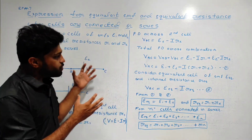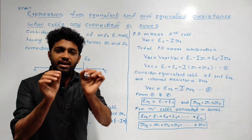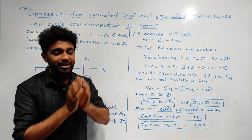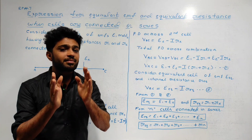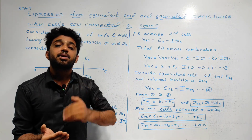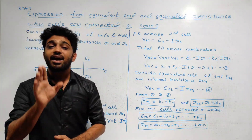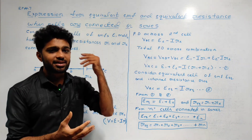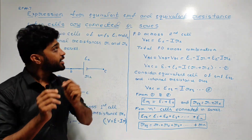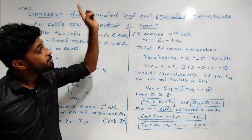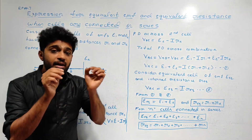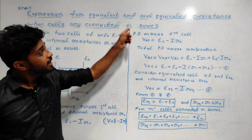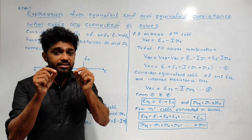Okay, mantra. In this derivation, all steps are easy to follow. Relax, but concentrate. Let's start this class. The equivalent EMF and equivalent resistance is derived from the expression when cells are connected in series.